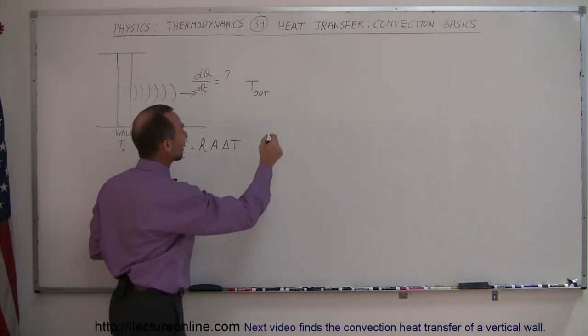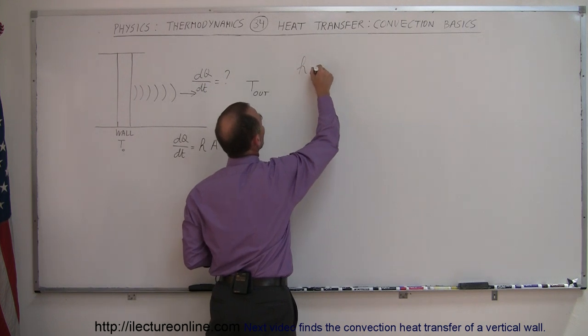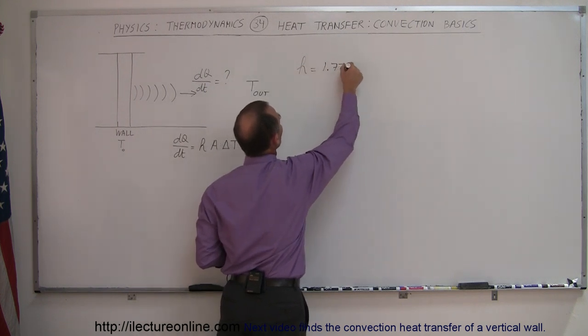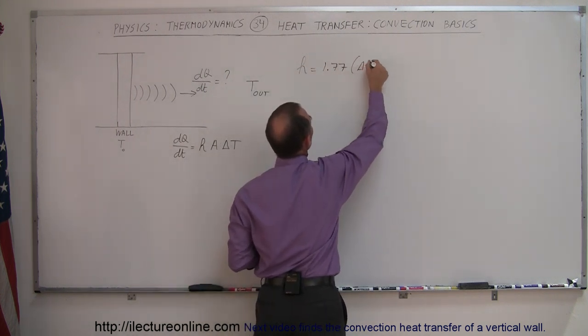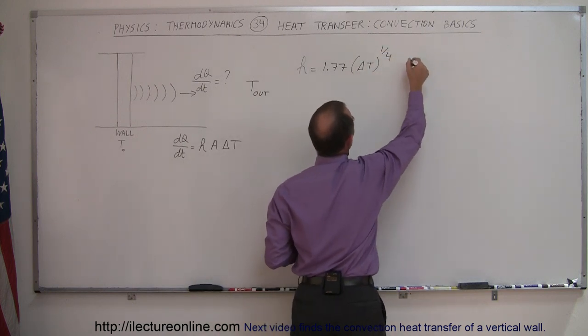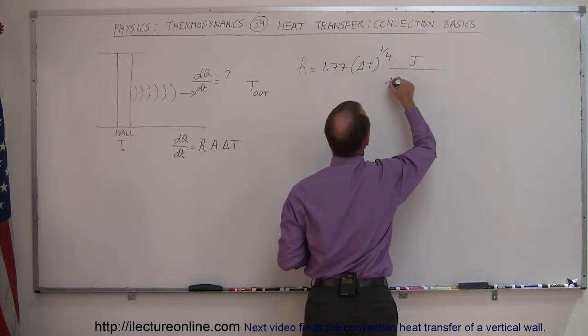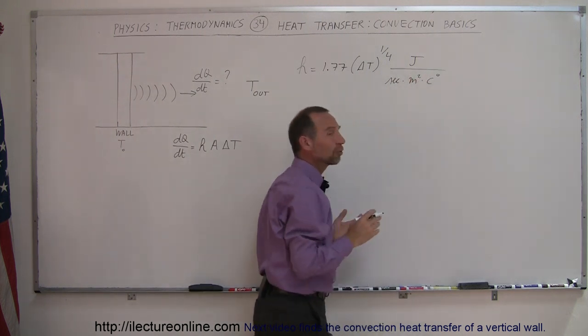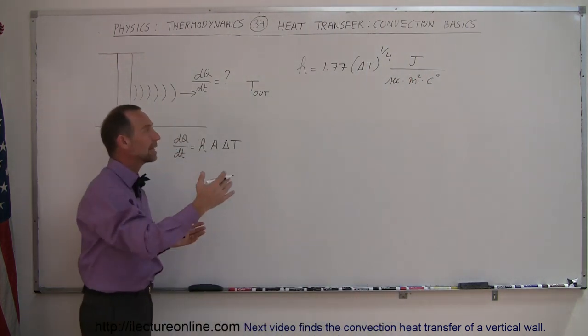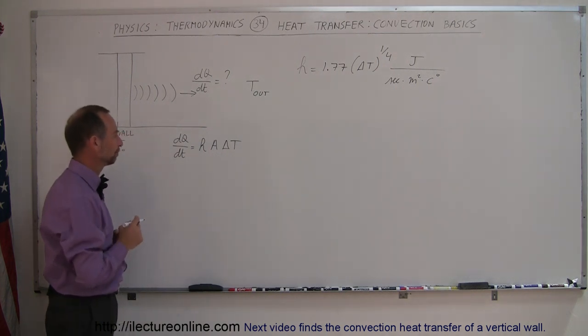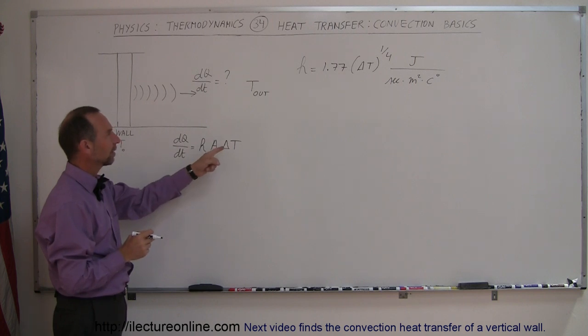So for a vertical wall in air, h is equal to 1.77 times the difference in temperature to the one-quarter power. The units would be joules per second per square meter per centigrade degree, representing the difference between the wall temperature and the temperature far away from the wall. Notice that it's also dependent upon delta T.